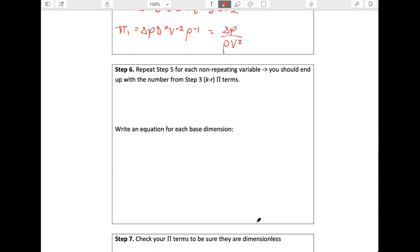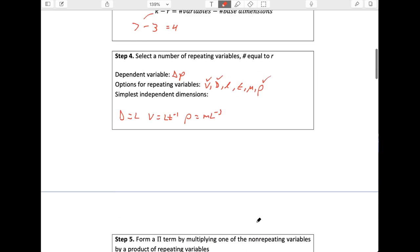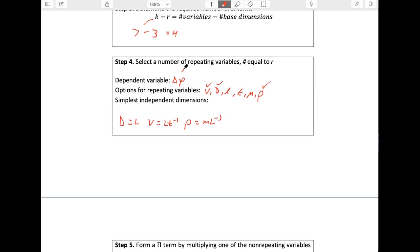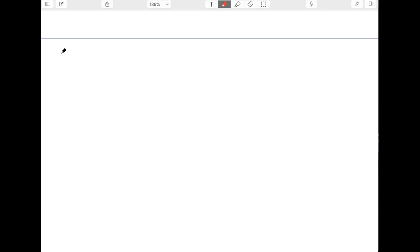We're going to repeat that for each of our variables, each of our non-repeating variable groups. And so I'm going to go to a blank page here so we can do it. But the next one up, we just did delta P. Let's go ahead and do viscosity next. So pi two is going to be viscosity multiplied by our three repeating variables raised to the ABC again.